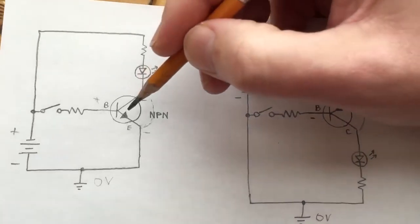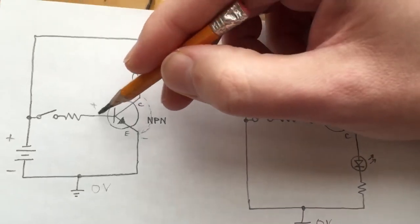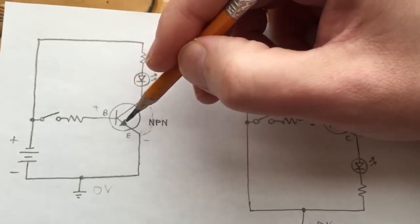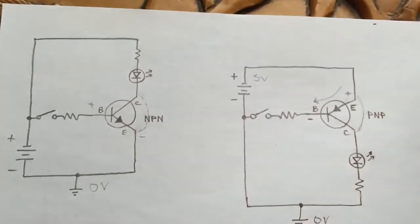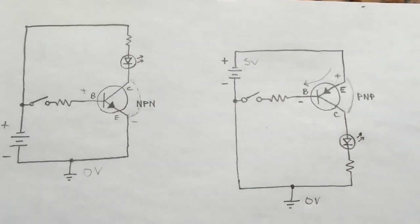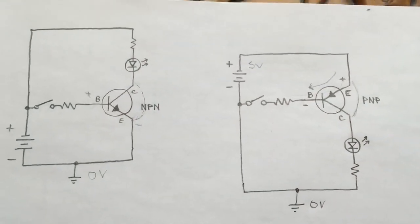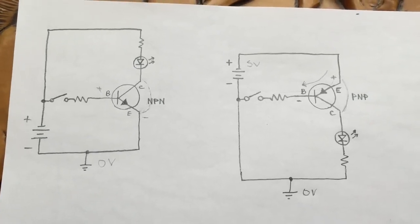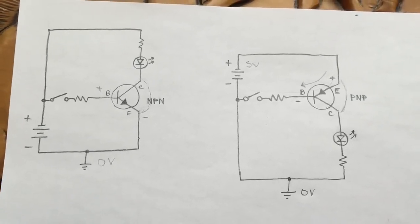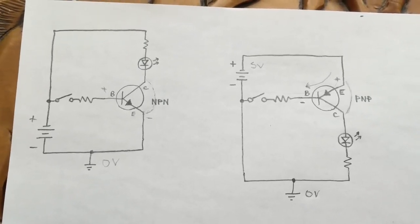For the NPN, the control signal simply has to be higher than ground — zero volts. That's the difference between the two types of transistors. If you've got any questions, please leave them in the comments.